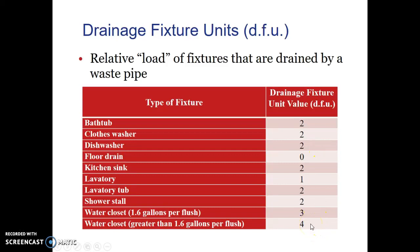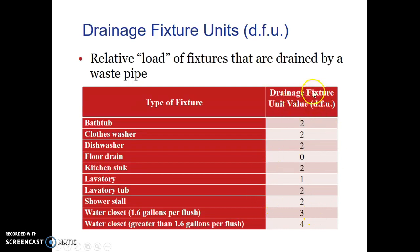Water closets with greater than 1.6 gallons per flush have a value of four drain fixture units. You take these drain fixture units and add them up. For example, a bathroom with a lavatory has a value of one, a tub is two — so that bathroom totals three. Add a water-efficient toilet at 1.6 gallons per flush, which is another three. So the drain fixture units for that bathroom would be six in total.